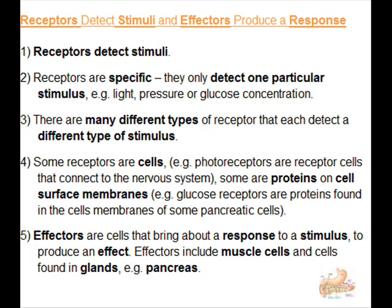Effectors are cells that bring about a response to a stimulus to produce an effect. Effectors include muscle cells and cells found in glands, for example the pancreas.